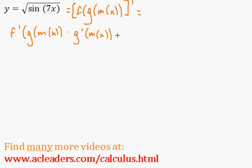So, if we take the derivative of f of g of m of x, the chain rule is going to tell us that that's going to be f prime of g of m of x times g prime of m of x times m prime of x. Looks a little bit more complicated than it actually is.